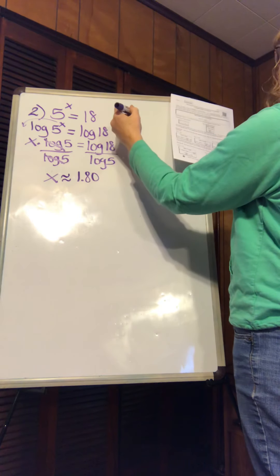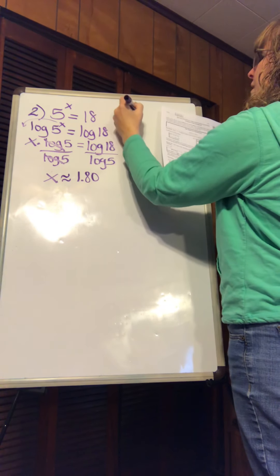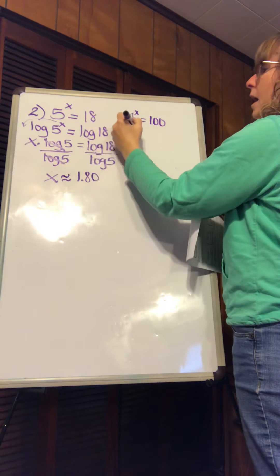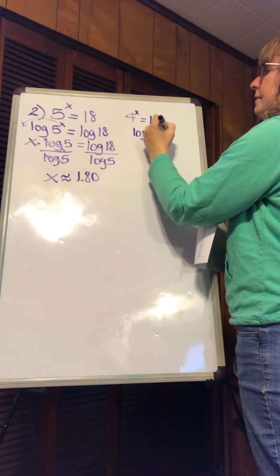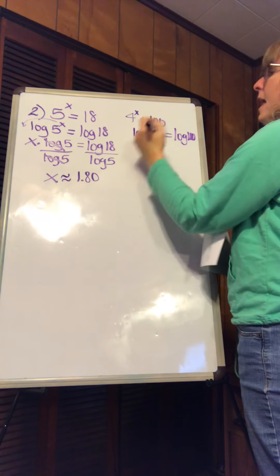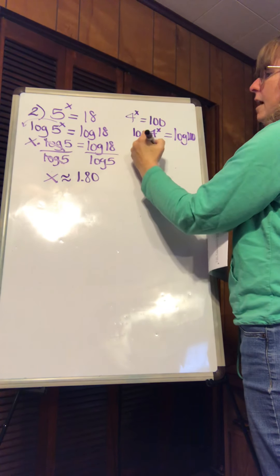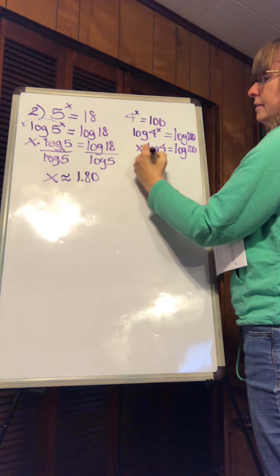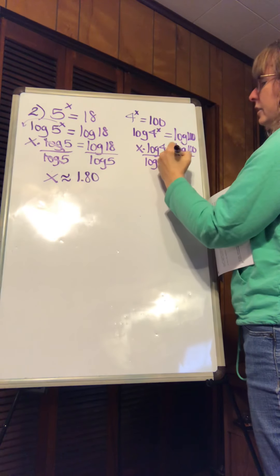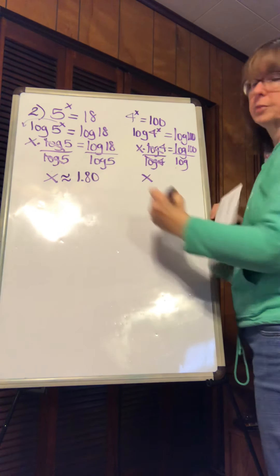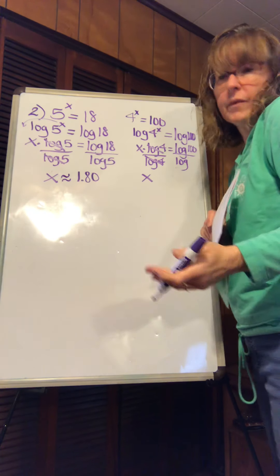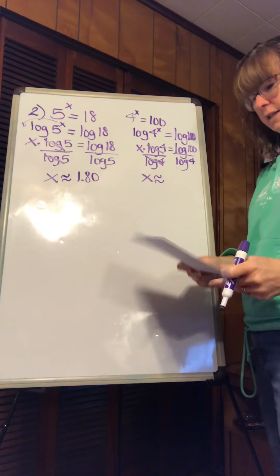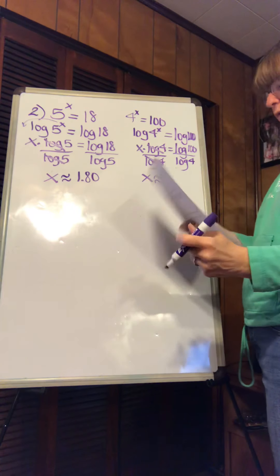Letter B has 4 to the x is equal to 100. You apply the log on 4 to the x and the log on 100. You get x times the log of 4 is equal to the log of 100. Divide out this log of 4. Notice I don't go near the calculator until I've completed all the algebra steps. Now you can type in the log of 100 divided by the log of 4. Rounding to the nearest hundredth, you should get 3.32.